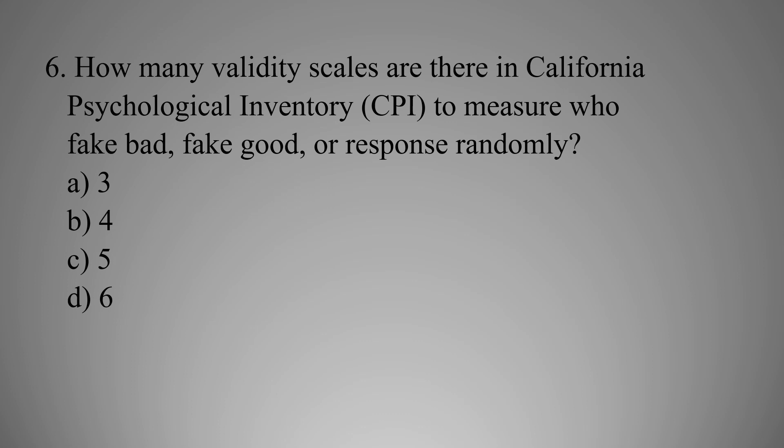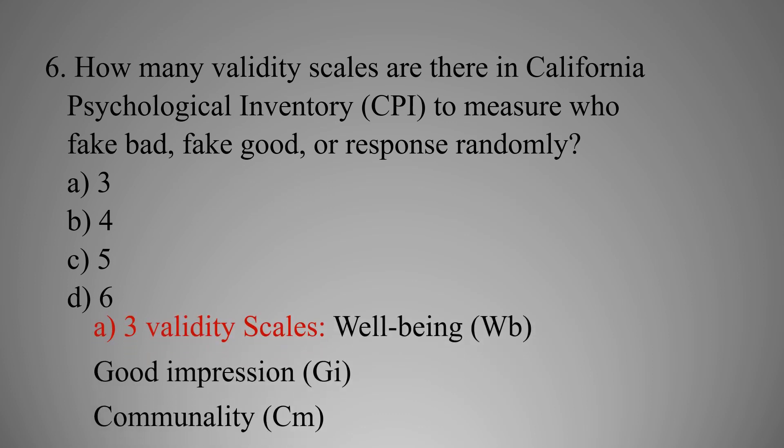MCQ number six: How many validity scales are there in the California Psychological Inventory to measure who fakes bad, fakes good, or responds randomly? Option A: Three validity scales, Option B: Four, Option C: Five, Option D: Six. The right option is A — three validity scales: well-being, good impression, and communality.